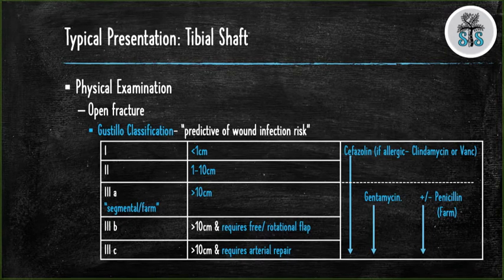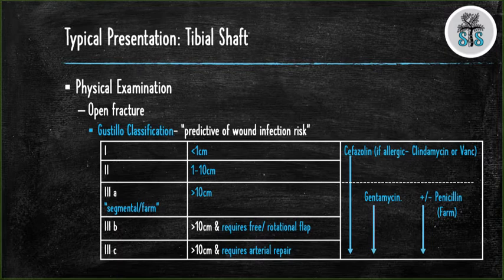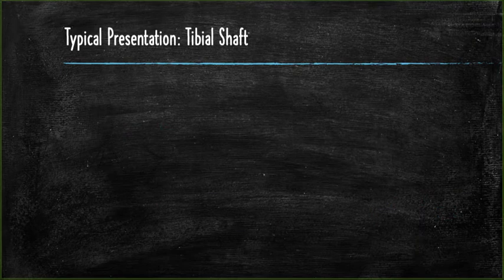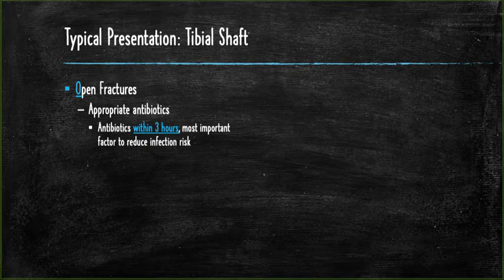Classifying the injury can help tailor your choice of antibiotic. All open fractures require cefazolin, which is a first generation cephalosporin. If the patient has an allergy to cefazolin, you can prescribe vancomycin or clindamycin. Once you cross into type 3 open fractures, you need to add gentamycin, which is an aminoglycoside, to cover gram-negative bacteria. If the injury was due to a farm injury, you will need to add penicillin to cover for clostridium. Studies have shown that antibiotics within 3 hours is the most important factor to reduce the risk of infection.